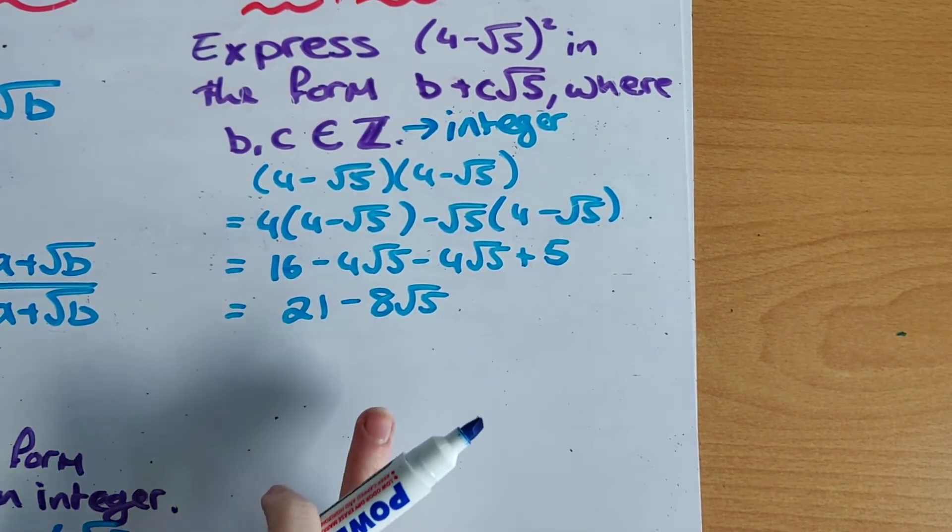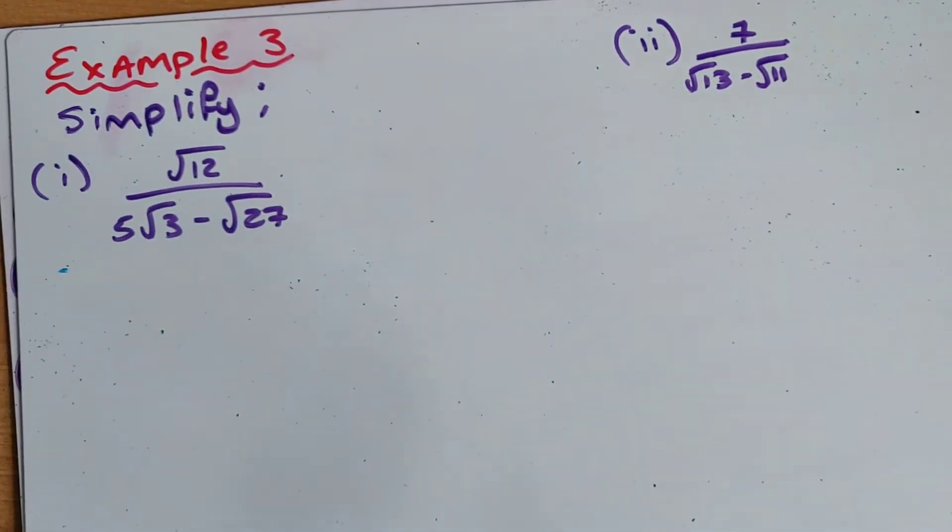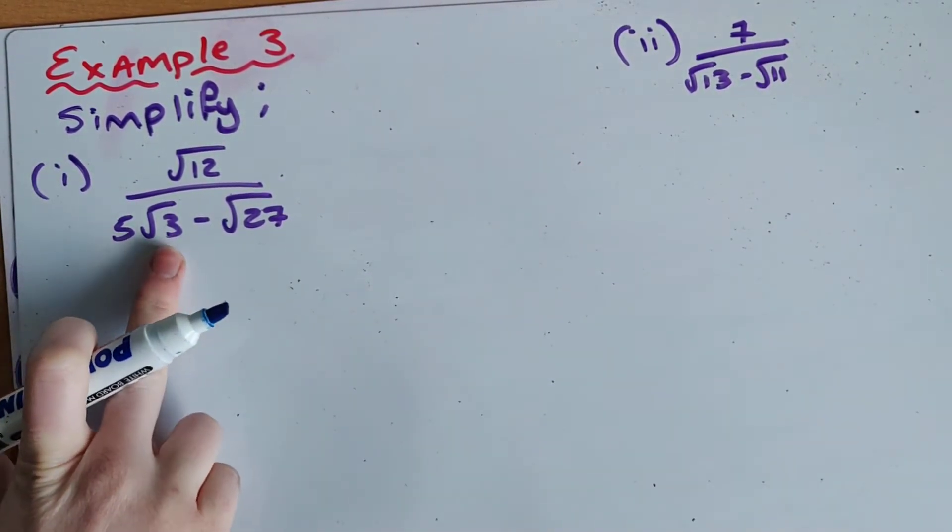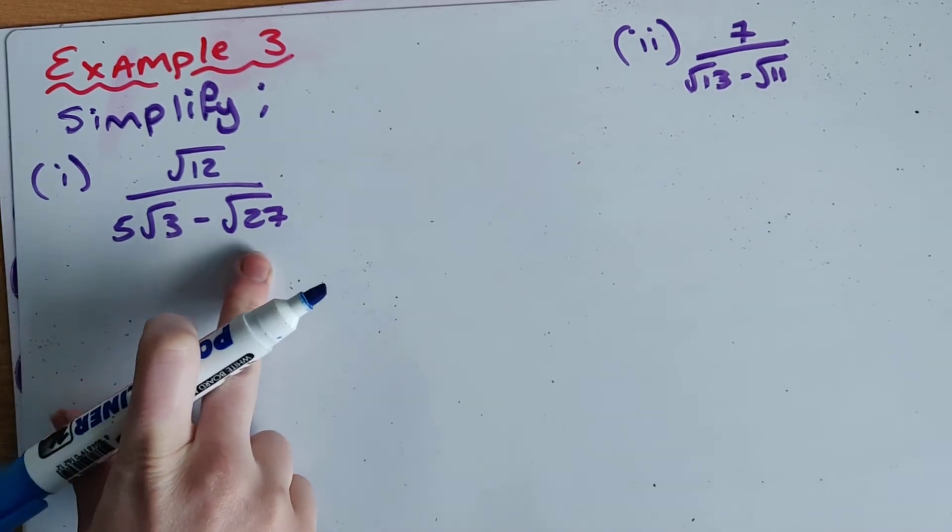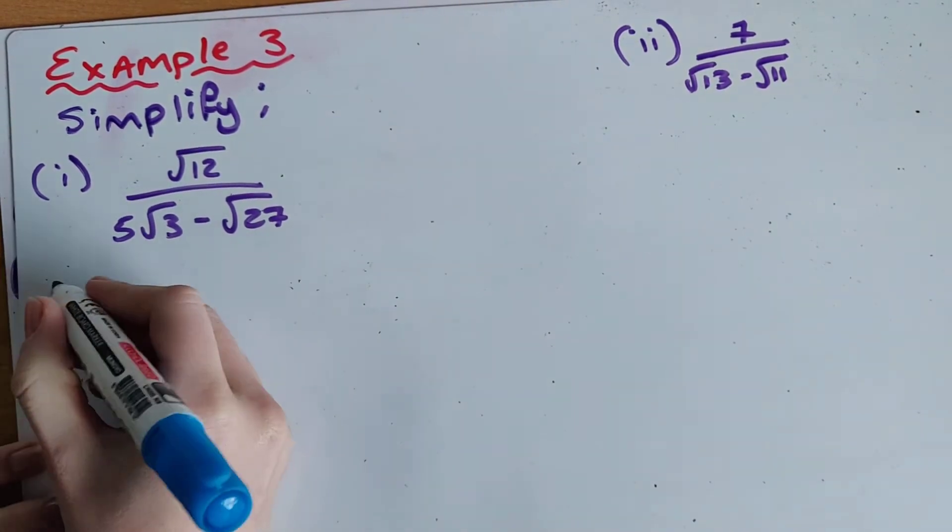Right guys take a second to go back over these two examples and then we're going to move on to example 3. So in example 3 we're looking at using surds and fractions. Now what I'd see from this fraction here is if I have root 3 I know 3 goes into 27 and it also goes into 12. So these two surds can probably be simplified down to root 3.